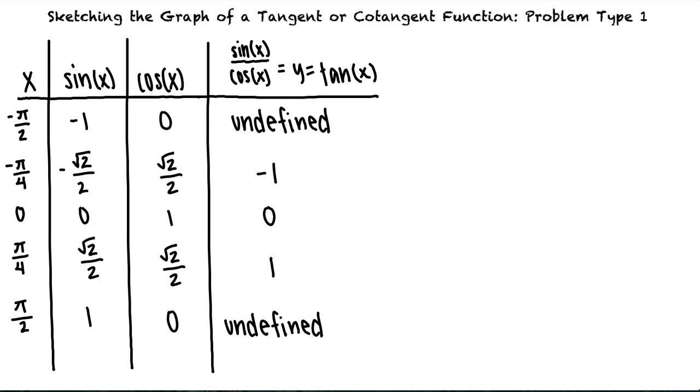This tells us that as x approaches these values y increases or decreases without bound so we can draw vertical asymptotes at x equals negative pi halves and x equals pi halves.